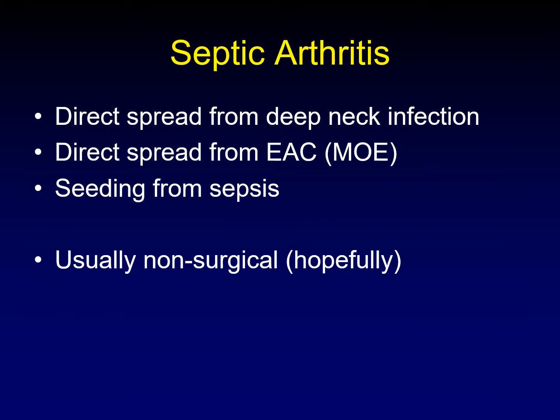Septic arthritis of the temporomandibular joint is usually from direct spread from deep neck infections. Sometimes malignant otitis externa, also called necrotizing otitis externa, spreads from the external auditory canal down to the temporomandibular joint and can cause septic arthritis. Sometimes you get seeding of the joint in patients with sepsis, although that's reasonably unusual. Usually, septic arthritis is a non-surgical disease and the joint can heal with medical therapy. Surgery in this case often does not go well.